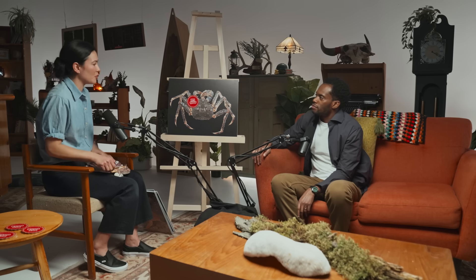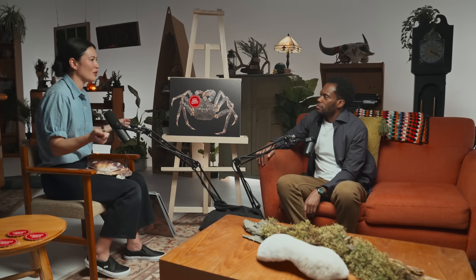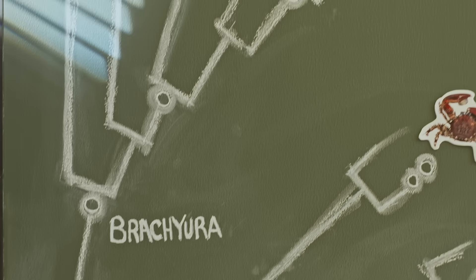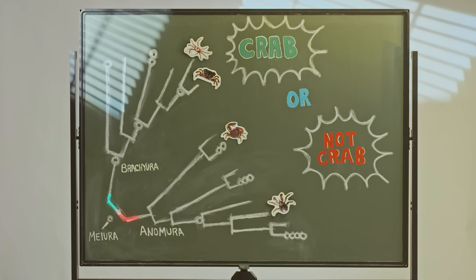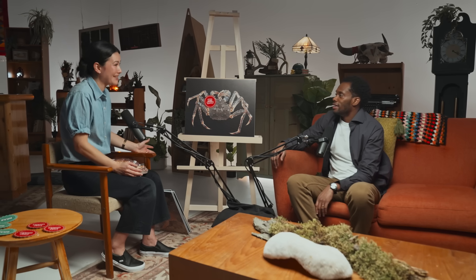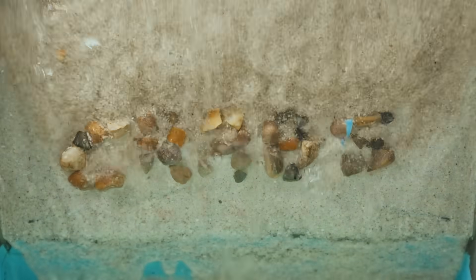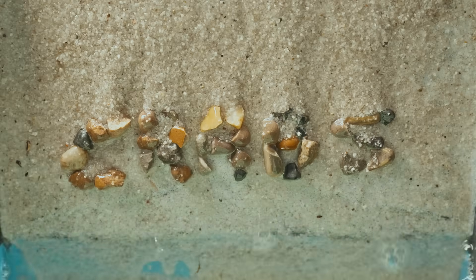Why do scientists even care about the difference? It's true — we call this a crab and technically now we just accept that it is a crab. But if we're talking about where they come from, their genetic lineage, it's not the same. They evolved separately. They are related, but they come from two different branches. For people like me, that's interesting — but honestly, for everybody else, this is just a crab. A pretty cool crab.